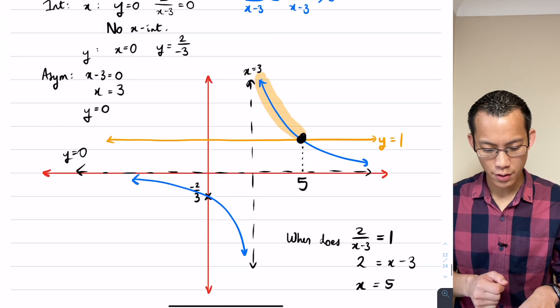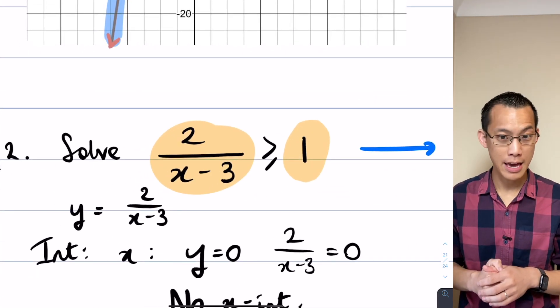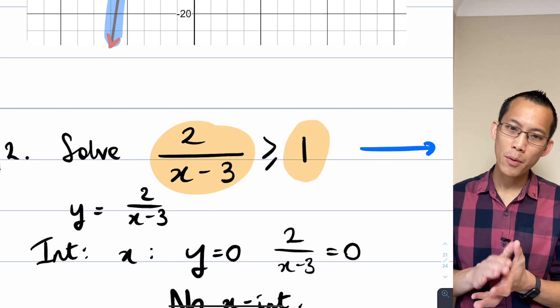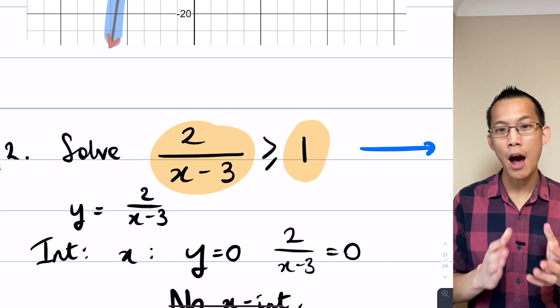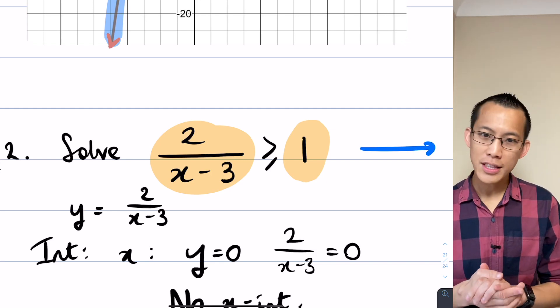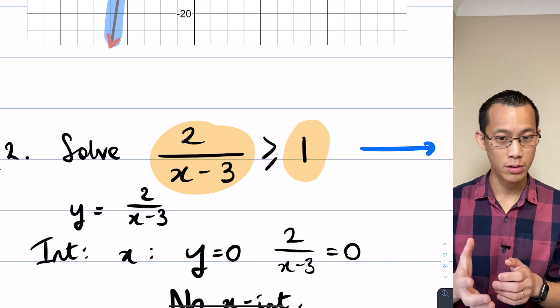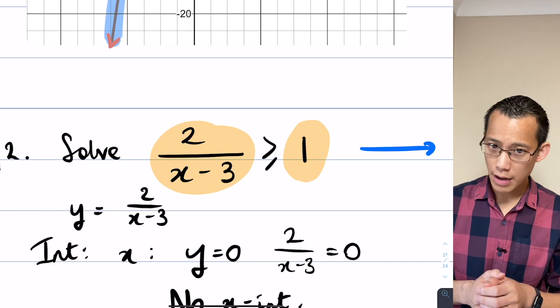Let's come back to the original question over here, 2 over x minus 3 is greater than or equal to 1. Now do you remember when we did the very first example, I highlighted for you that you have to be quite cautious with inequalities, they're not the same as equations. You can do a lot of the same things that you do to inequalities as you do with equations, but you can't do everything, right?